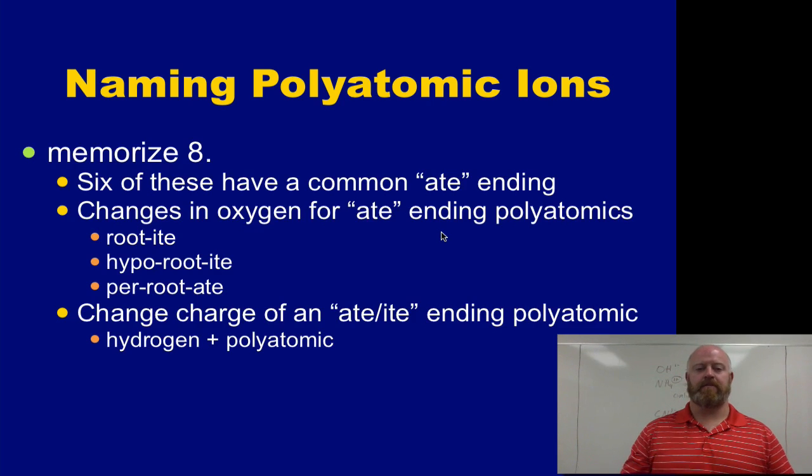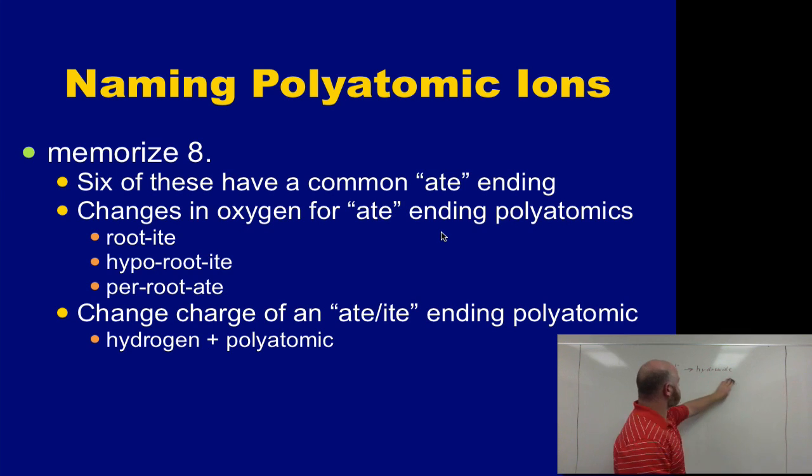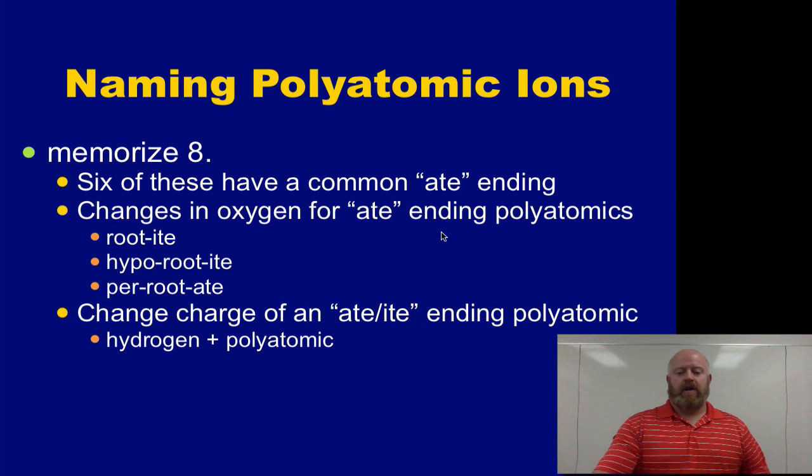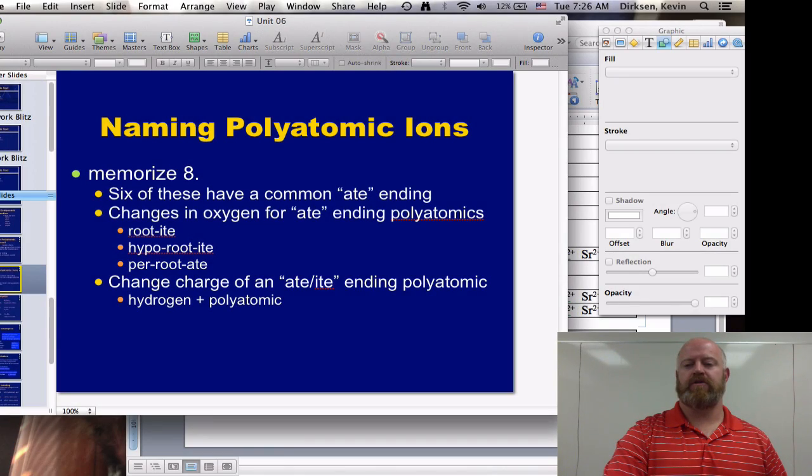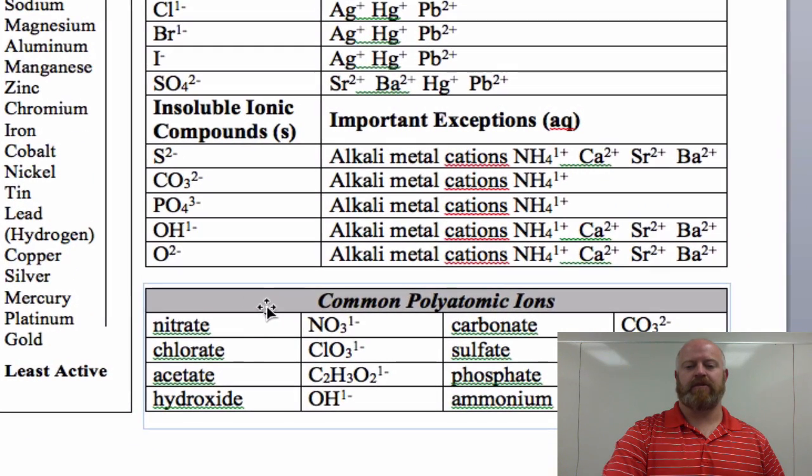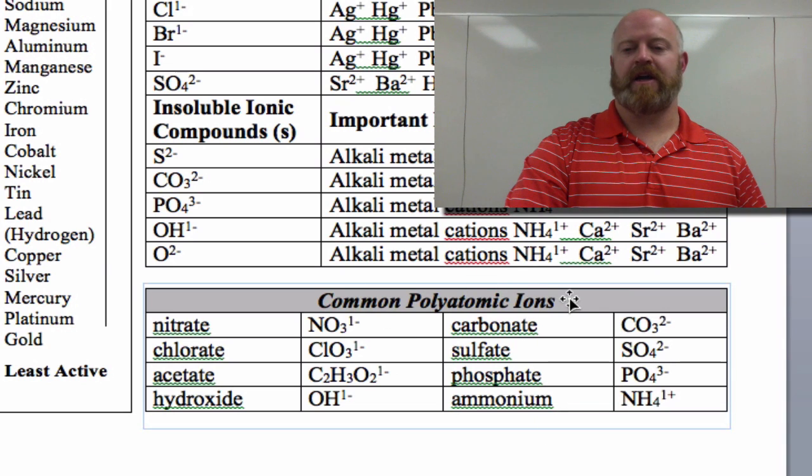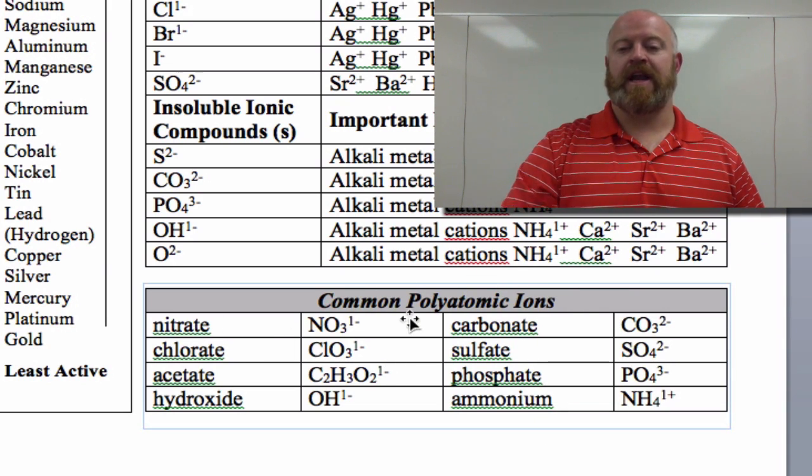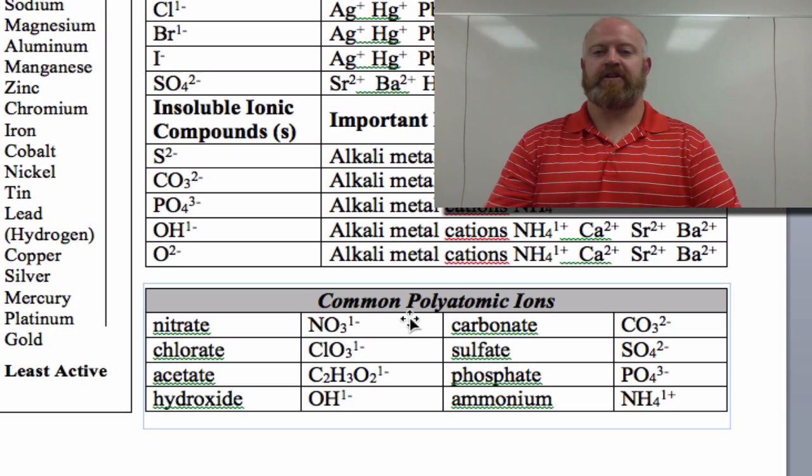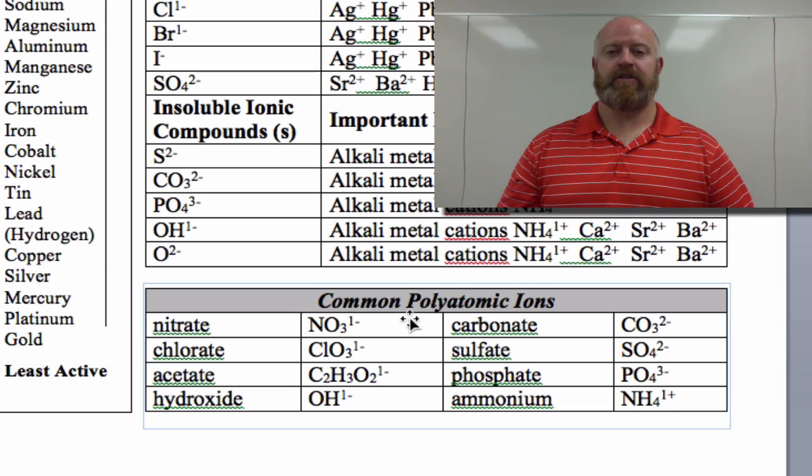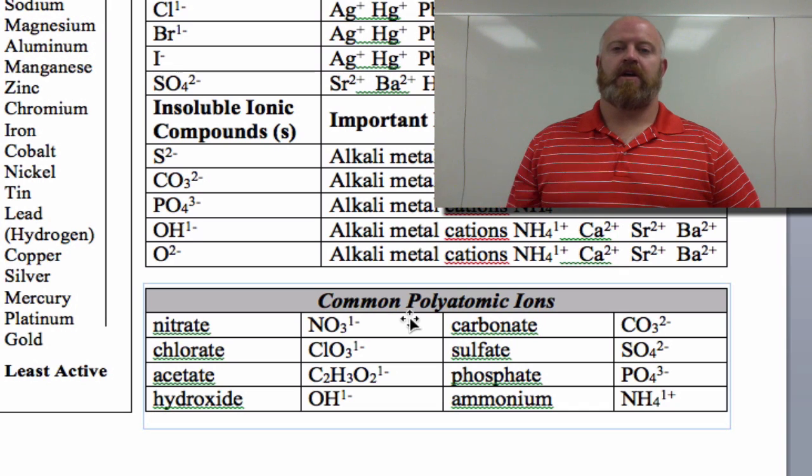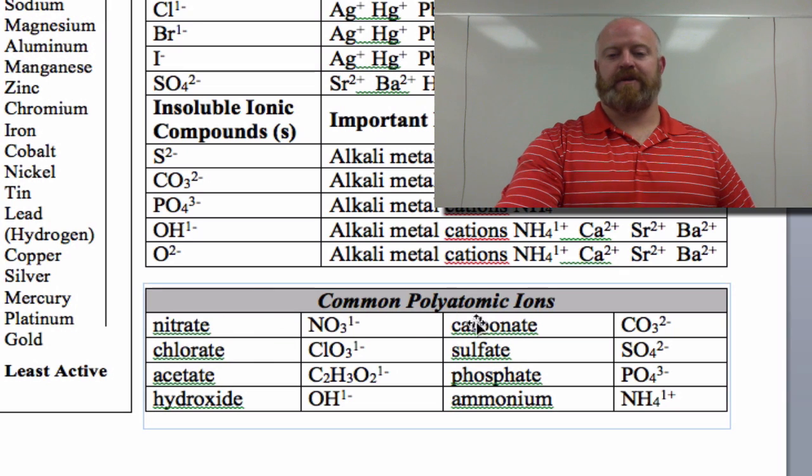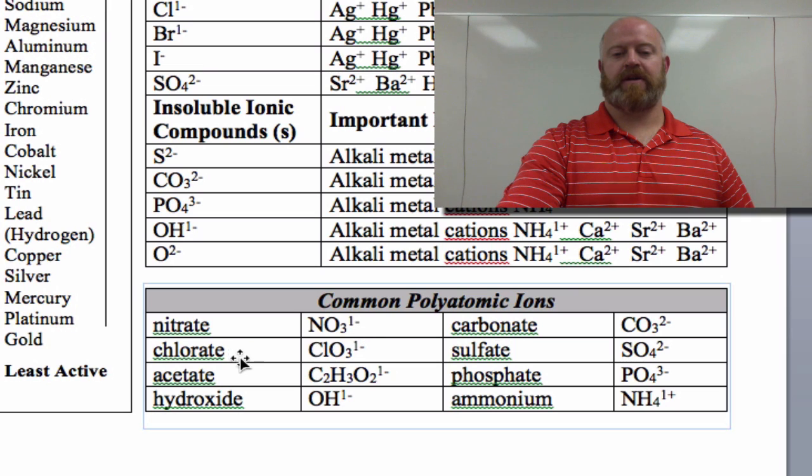Now, when it comes to polyatomic ions and naming them, we have to put eight of them to memory. There really is no other way of doing it besides just purely memorizing these. If we go to that list, if we go to your periodic tables, on the back of your periodic tables, on the very bottom, you're going to see a small box that says common polyatomic ions. And if you look, there are eight of them there. Those eight you are required to memorize. In fact, you're going to have those memorized and we're going to do a quiz on those eight polyatomic ions on Thursday, where you come in and you'll list out all eight polyatomic ions, their formulas and their charges. So these eight you must memorize. Right here. Nitrate NO3 1-. Chlorate ClO3 1-. Acetate, hydroxide, carbonate, sulfate, phosphate, ammonium. These eight must be put to memory.